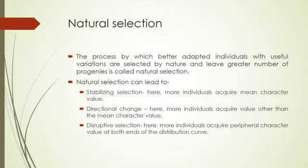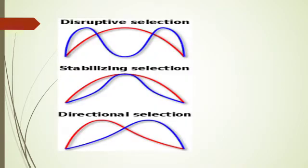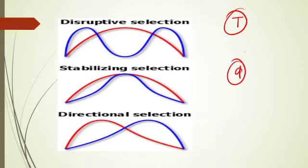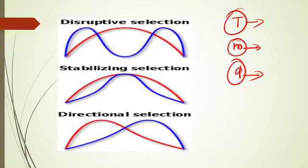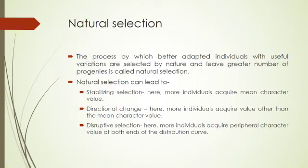Natural selection affects allelic frequency. Looking at three graphs — disruptive selection, stabilizing selection, and directional selection — with characters like tall, dwarf, and medium height: in disruptive selection both extreme ends (tall and dwarf) are selected, acquiring peripheral character values at both ends of the distribution. In stabilizing selection, the medium character is selected. In directional selection, only one extreme end (either tall or dwarf) is favored.